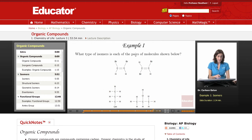Example 1. What type of isomer is each of the pairs of molecules shown below? Remember that isomers have the same molecular formula. So let's just double check and see that that's true.